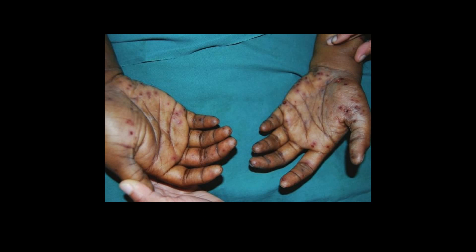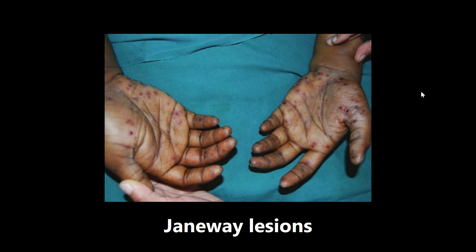This next picture is an example of Janeway lesions. These are painless — very important to know that — painless erythematous lesions on the palms and soles. This is another sign of infective endocarditis. There are a lot of different pictures they can test you on to suggest that's the disease the patient has.